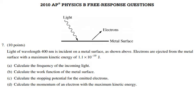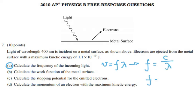For the first part, we have to calculate the frequency of the incoming light. We can use the wave velocity formula: the velocity of a wave equals frequency times wavelength. So the frequency equals the velocity divided by the wavelength. The velocity of electromagnetic radiation is the speed of light, 3×10⁸ m/s, divided by the wavelength of 400 nanometers.